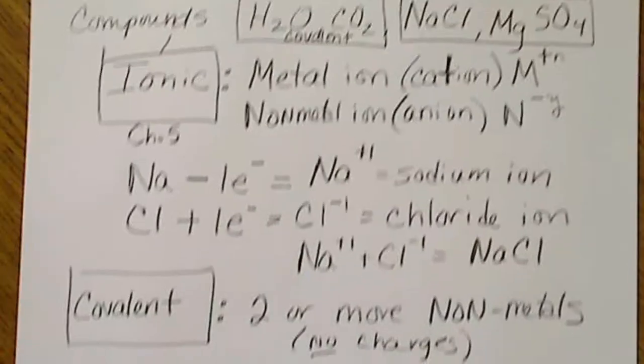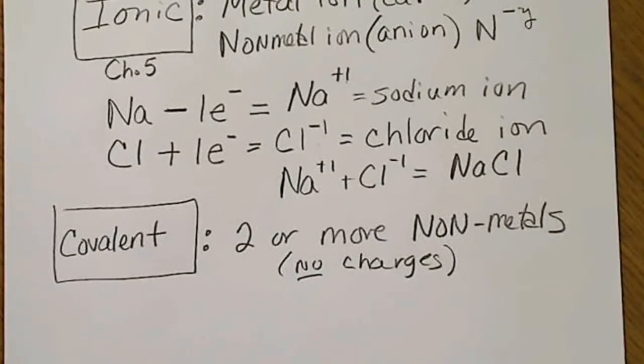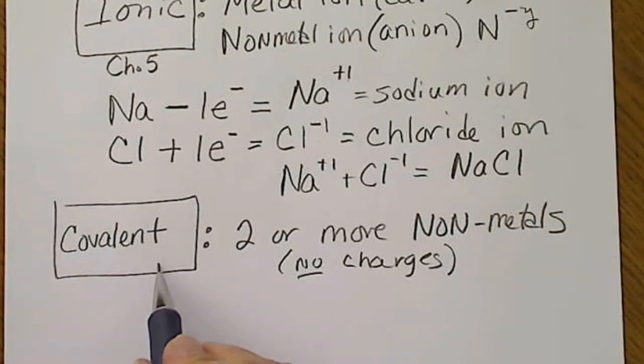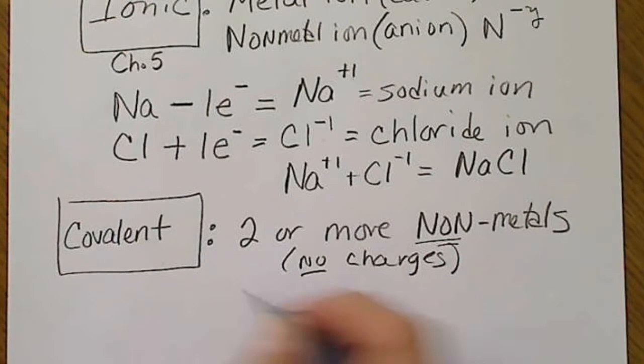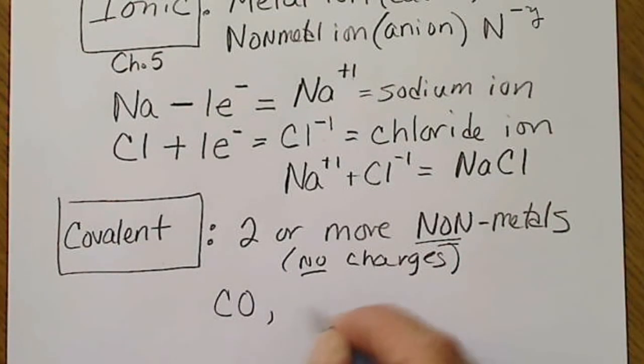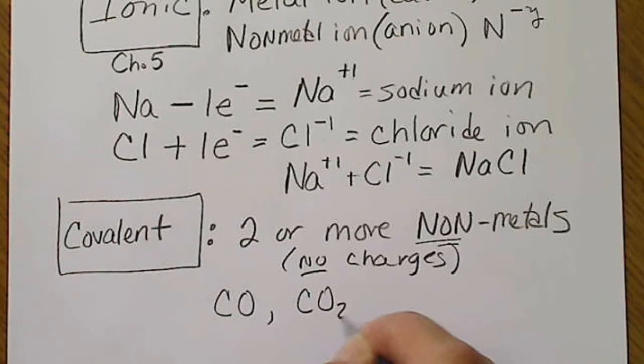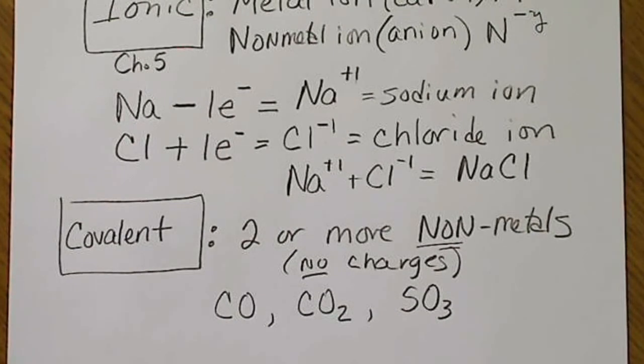And again for this chapter ten we're going to be focusing on non-metal, non-metal compounds like carbon monoxide, carbon dioxide, sulfur trioxide. So there are simple non-metal, non-metal compounds that we're going to be caring about.